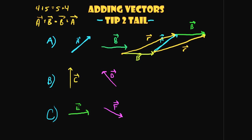Let's do the next example. We have vector C going up and vector D going at an angle. We can draw vector D here to keep things clean. To draw the resultant vector you start at one tail and move to the other tip — so here's our tail, we move to the tip, and we get the resultant. We could have placed D on the other side and gotten an identical resultant, because vectors with the same magnitude and direction are identical.